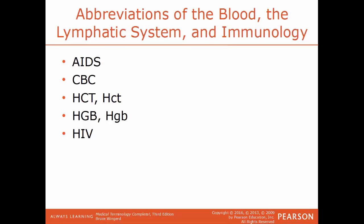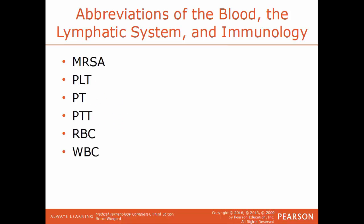Common abbreviations: AIDS — acquired immunodeficiency syndrome; CBC — complete blood count; HCT — hematocrit; HGB — hemoglobin; HIV — human immunodeficiency virus; MRSA — methicillin-resistant Staphylococcus aureus; PLT — platelet count; PT — prothrombin time; PTT — partial thromboplastin time (both related to coagulation time tests); RBC — red blood cells; WBC — white blood cells.